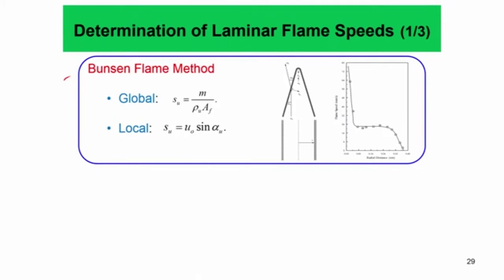Here we talk about the different methods for determination of laminar flame speed. One can essentially determine laminar flame speed using the Bunsen flame method, where you have a Bunsen flame stabilized on a wall with a fuel-air mixture coming out through a tube — this is the flame. It is essentially a conical flame stabilized here; it can be either planar or cylindrical depending on the situation.